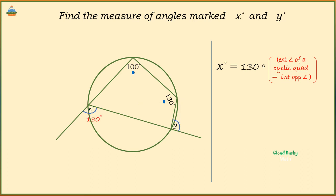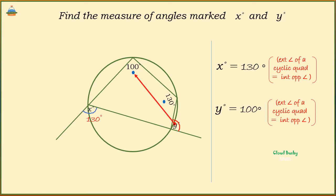Now, let's move on to angle Y. Angle Y is equal to 100 degrees. This is because the exterior angle of a cyclic quadrilateral is equal to the opposite interior angle.